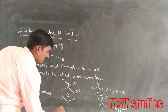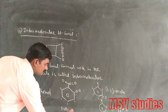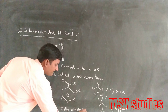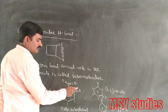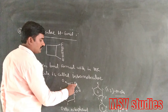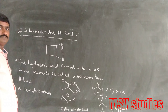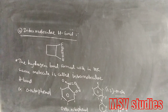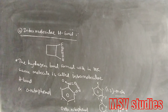In ortho-nitrophenol, the hydrogen bond is formed between the hydrogen and oxygen within the same molecule. These types of hydrogen bonds are called intramolecular hydrogen bonds.